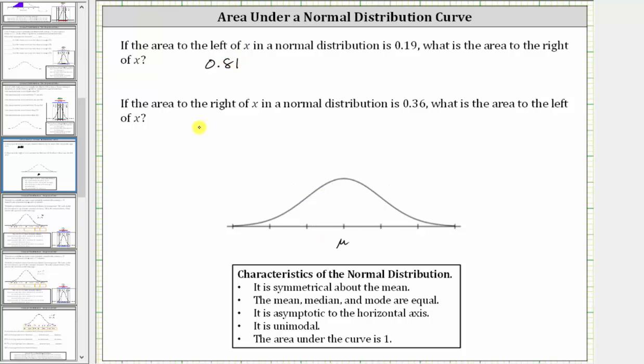For the next question, if the area to the right of x in a normal distribution is 0.36, what is the area to the left of x? Well, of course, it's going to be one minus 0.36, but let's go ahead and model the area on the normal distribution.